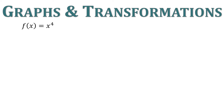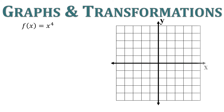Now let's look at another function. The previous function was x to the fifth; this function is x to the fourth. This one is very similar to x squared in that its degree is an even power. It's very similar — just a little bit sharper than x squared.